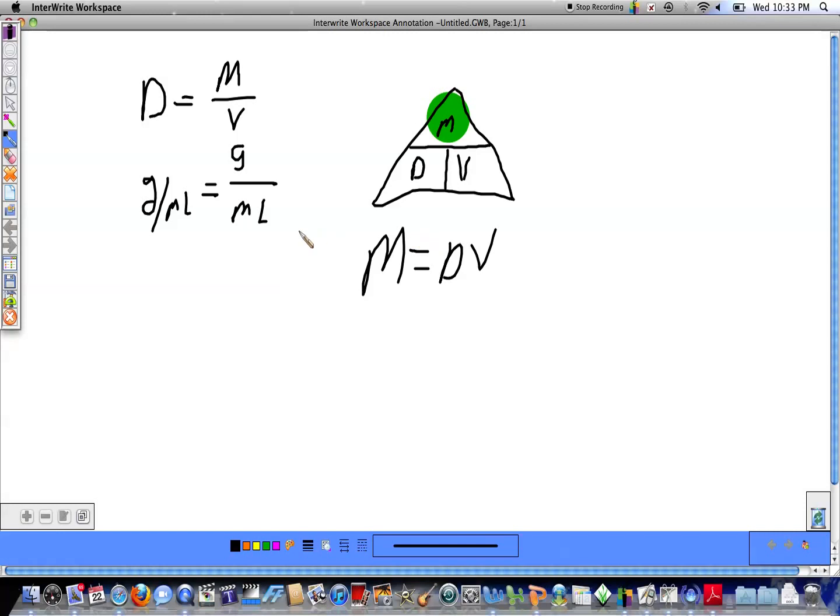Now, if I was looking to solve for volume, I do the same thing. Basically, take my finger or whatever I have and I cover up the V, cover up volume, and I get mass divided by density. So, volume is equal to mass divided by density.